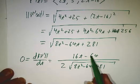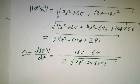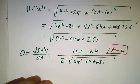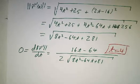And when is that 0? Well, that's 0 when t equals 4. So on the fourth second, the particle is going the slowest.